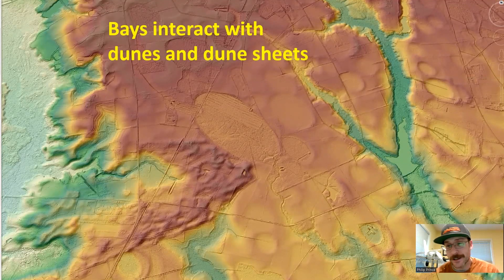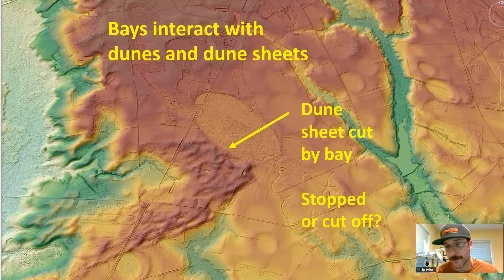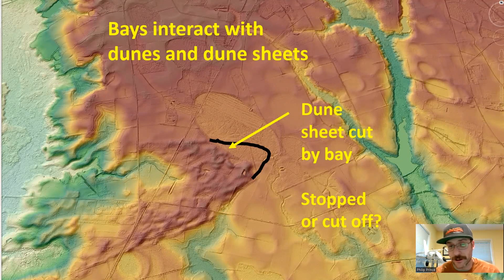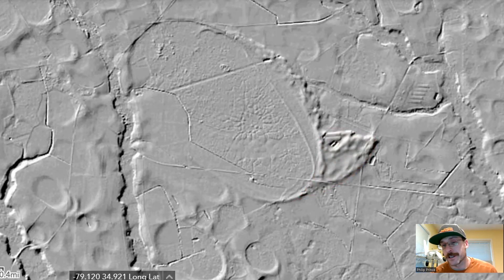Do the bays interact with these sand dune sheets? Yes, they do. Here you see one where the sand dune sheet is cut off by the bay. Does that mean the dune sheet couldn't migrate past a water-filled lake, or that the bay cut off the end of the sand dune sheet? I'm not sure you can interpret that from LIDAR alone, but one way or another these landforms are interacting — they share this old landscape. Relationships get even more interesting when the sand dune sheet actually comes from the bay itself, because in that case the bay had to exist for that dune sheet to form.